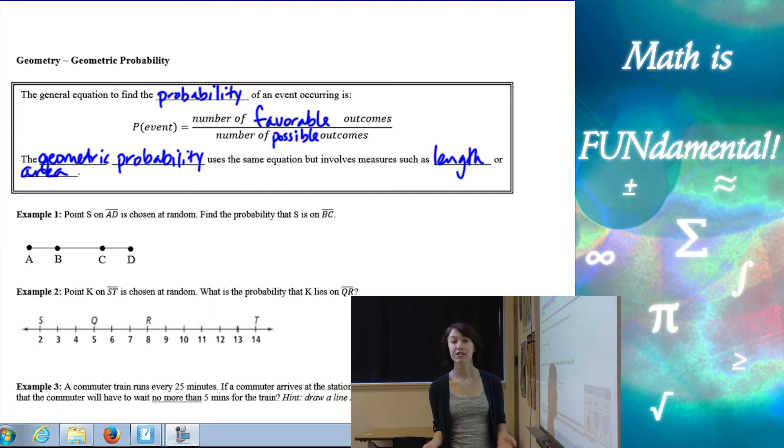So the general equation to find the probability of an event occurring is shown by this formula here. We have the number of favorable outcomes in the numerator and the number of possible outcomes in the denominator. Now geometric probability is going to be slightly different. It follows the same formula but we use length or area, so geometric principles to find the probability.